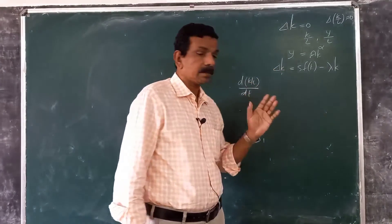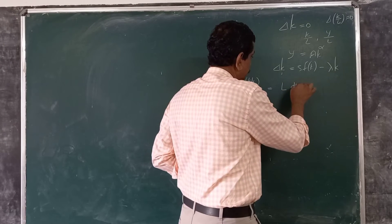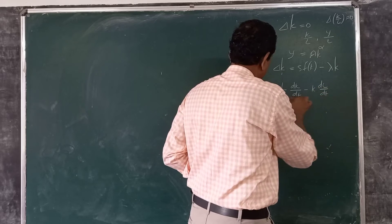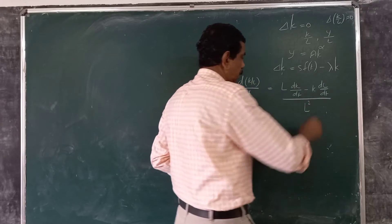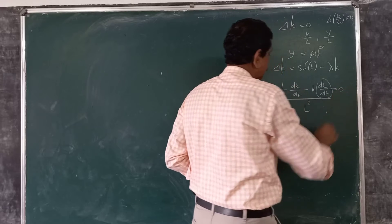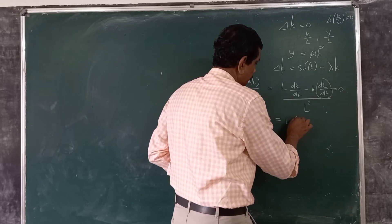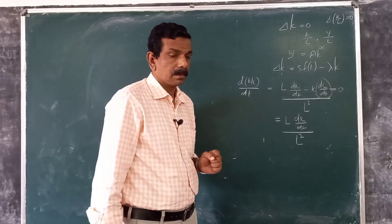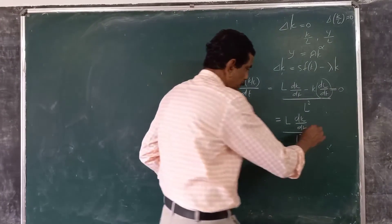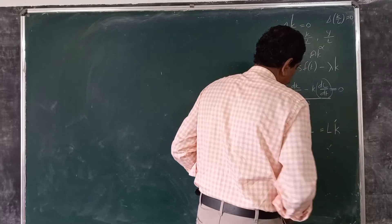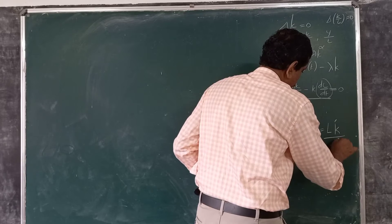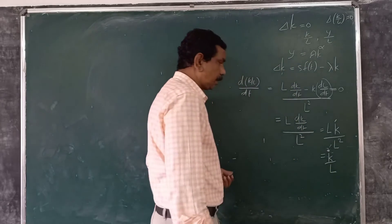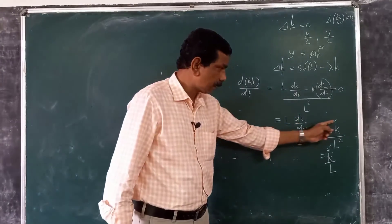Differentiating k/L with respect to t gives: d(k/L)/dt = (L·dK/dt − K·dL/dt) / L². In this model we assume dL/dt = 0, so it simplifies to L·(dK/dt) / L², which equals k̇/L, where k̇ = dK/dt is the rate of growth of capital over time.